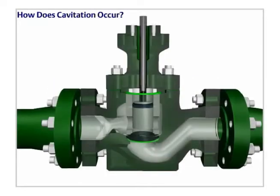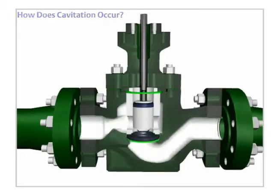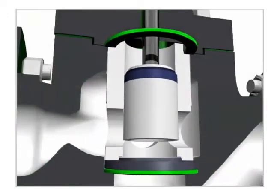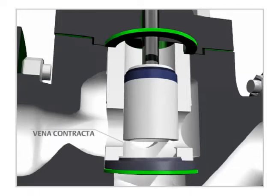Cavitation occurs as a liquid passes through a restriction, such as a valve. The restriction causes the liquid's velocity to increase and its pressure to decrease. The point of maximum velocity and minimum pressure is called the vena contracta.